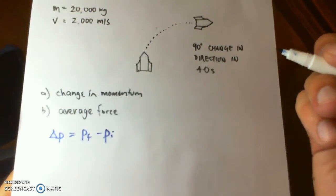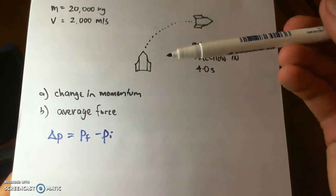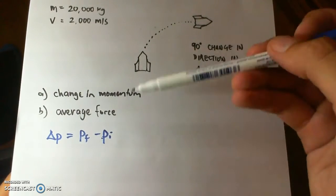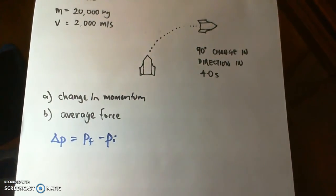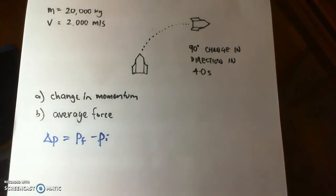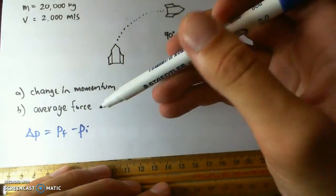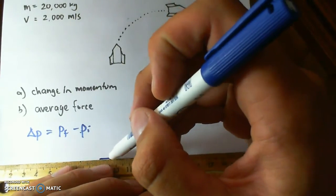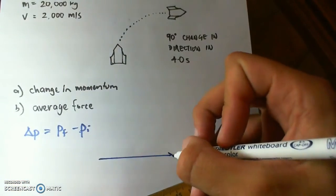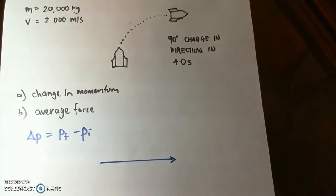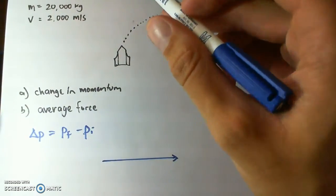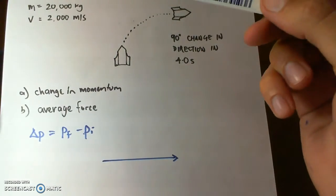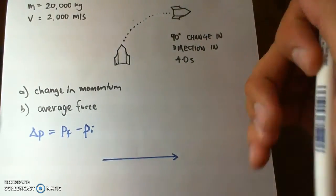Now momentum is a vector quantity so we can draw this in vector form. Now the final momentum of the rocket ship is to the right. The initial momentum of the rocket ship is up, however this equation is calling for the negative, so we'll draw this momentum down.